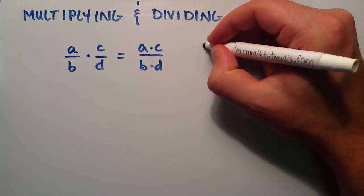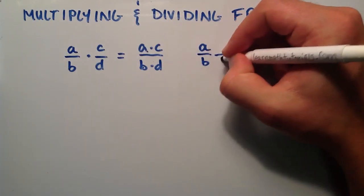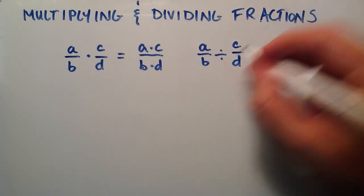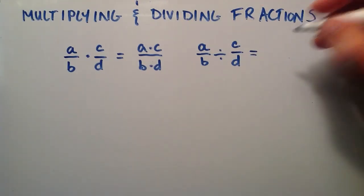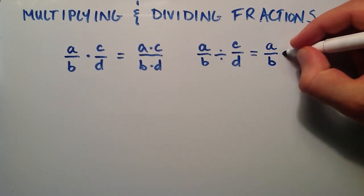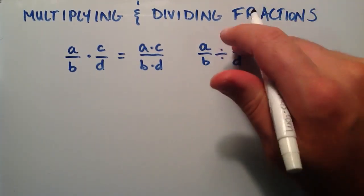And when we divide fractions, this is going to be A over B divided by C over D. Well, to divide, we simply flip the second term, and this becomes a multiplication problem: A over B times D over C. We simply flip the second term.